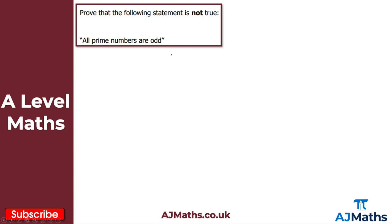Be careful here — we're not trying to show that all prime numbers are odd; we're showing this statement is not true. Intuitively it sounds sensible because even numbers are always a multiple of two. However, the number two itself is actually prime, so two is our counter example.